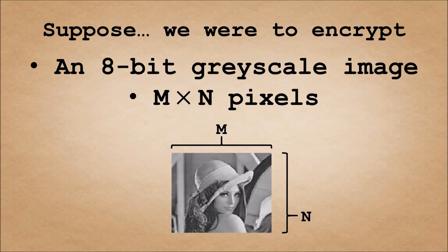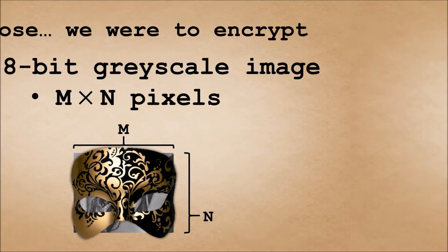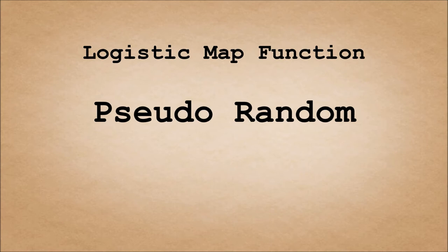Now, suppose we were to encrypt this 8-bit grayscale image. To do that, we will require an encryption key. This can be thought of as a mask to cover the image to prevent people from seeing what it actually is. To do this, we make use of the logistic map function.